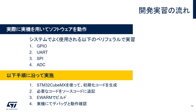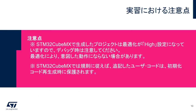4つのペリファラルをターゲットにソフトウェア開発実習を行います。流れとしましては、STM32 CubeMXを使って初期化コードを生成し、次にEWARM上で生成されたプロジェクトファイルを開き、必要なコードをソースコードに追記、ビルド、実機にてデバッグと動作確認となります。ここで注意点が2つございます。